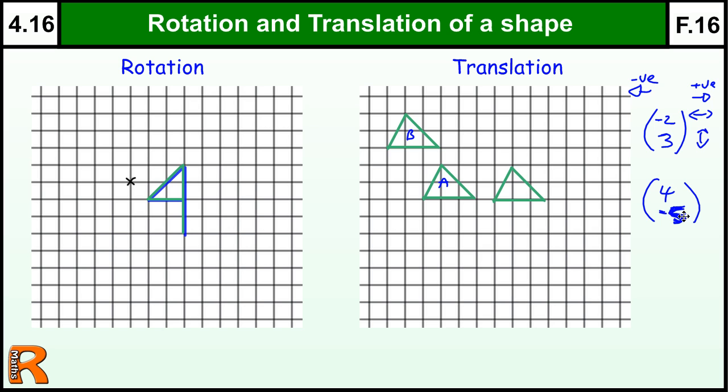And then we need to move it minus five, which is down five. One, two, three, four, five. And that would be, that was C. That would be the translation that maps A onto C.